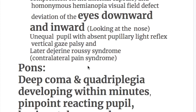An important feature of thalamic bleeding is downward and inward eye deviation — looking toward the nose. There are also unequal pupils with absent pupillary light reflex, vertical gaze palsy, and later development of Dejerine-Roussy syndrome, or contralateral pain syndrome, though this occurs later and not immediately.